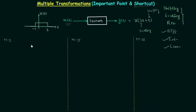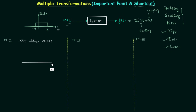In method number one we will first perform the scaling. The most important line of this lecture — which you must remember to solve any multiple transformations question — is: whenever you perform any transformation, you have to look at the x-axis. Here the x-axis is the time axis, so all transformations must be performed against the time axis. We are having signal x(t) and performing time scaling to get x(2t).